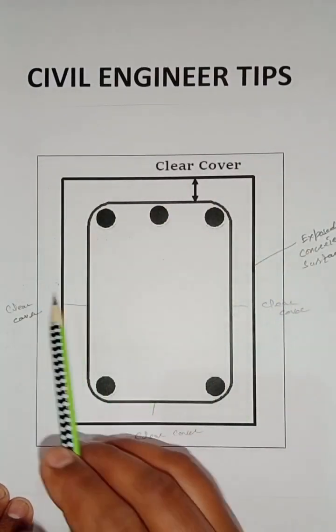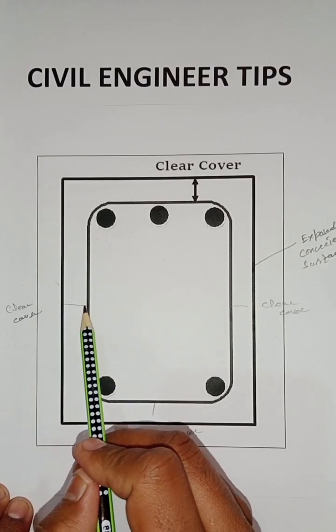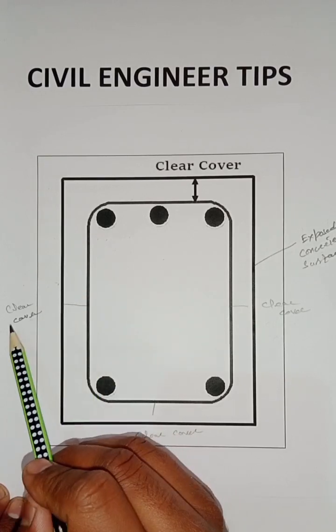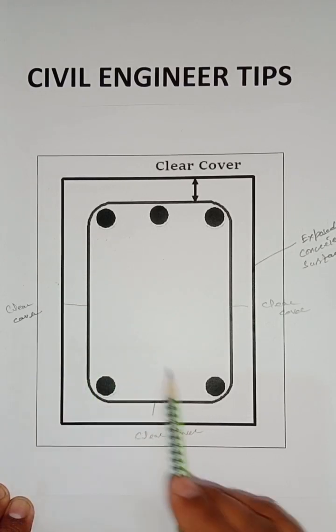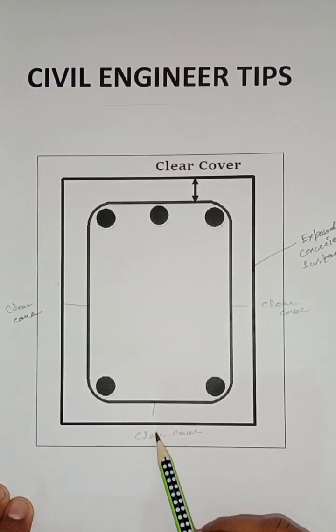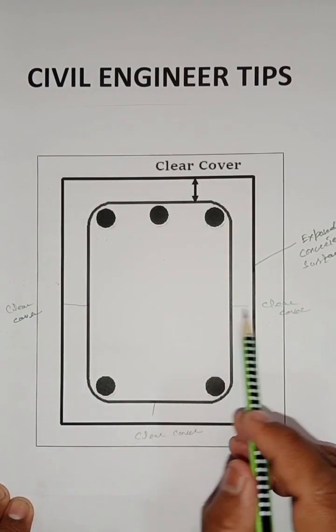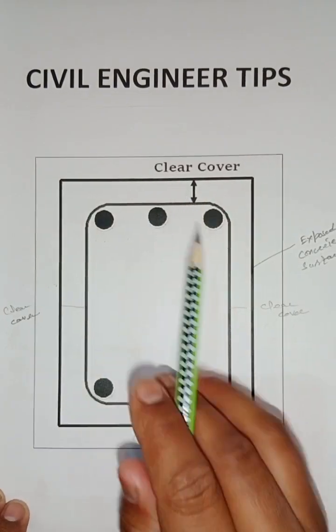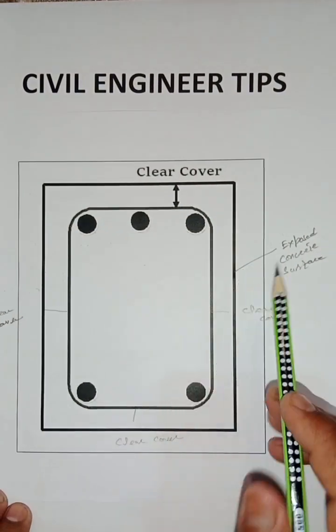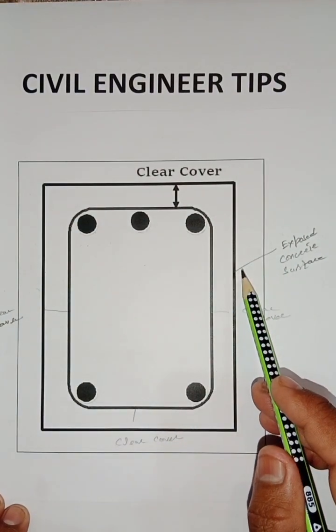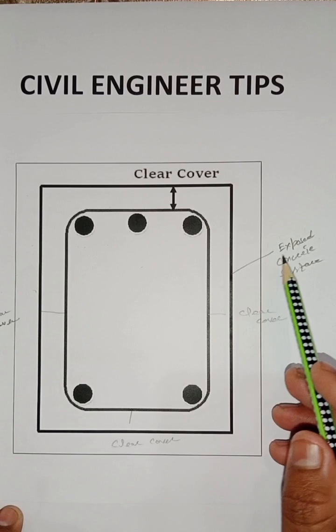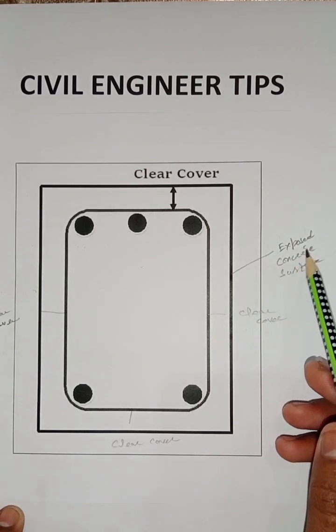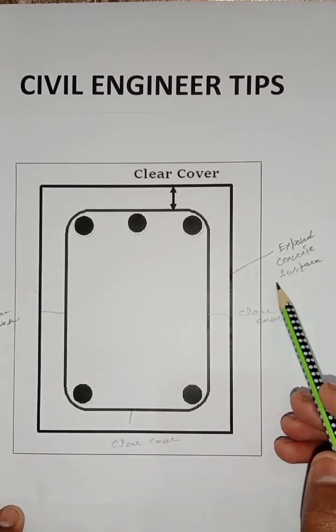This is a column — this is the clear cover on one side, second side, third side, and fourth side. Its outer face is called the exposed concrete surface.